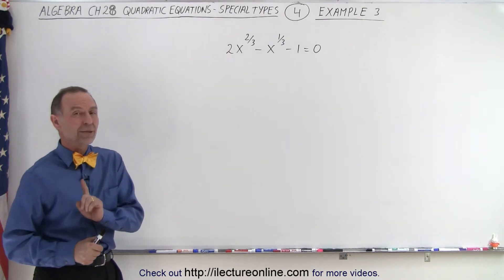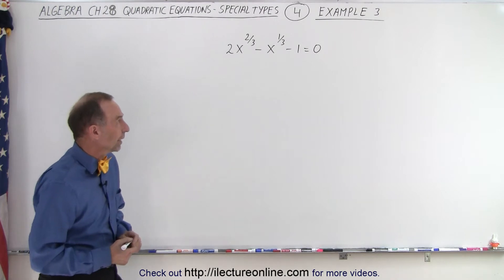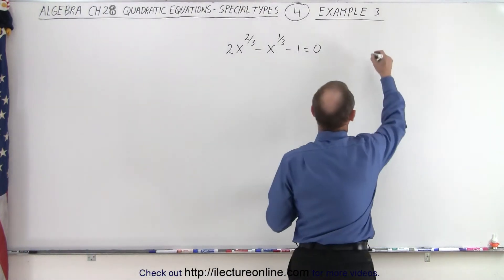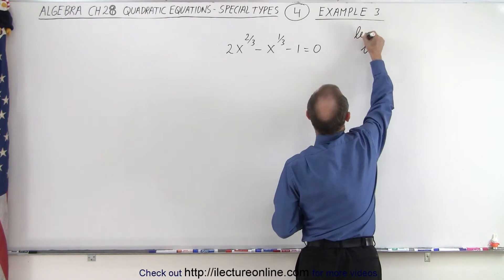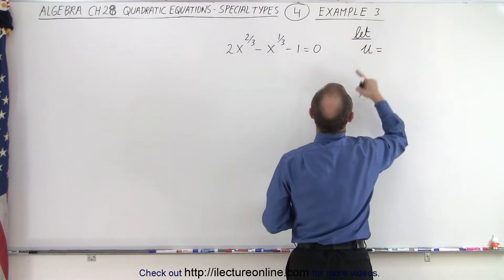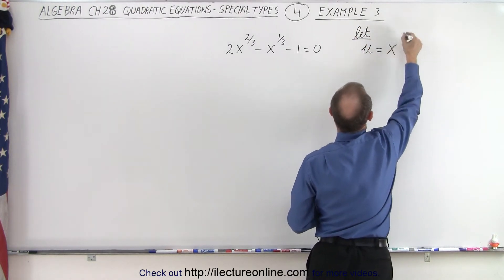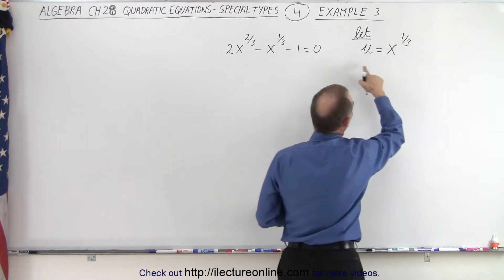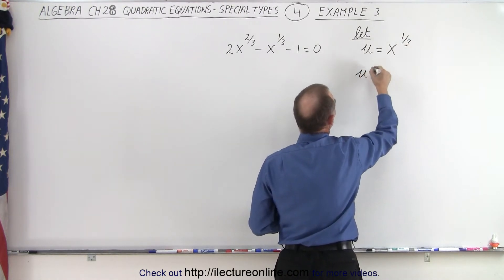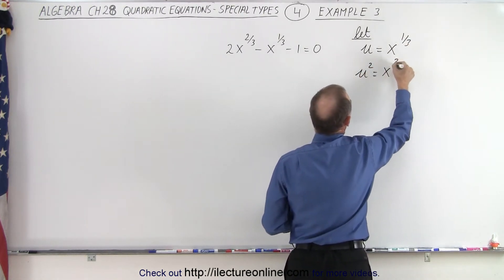But first we need to make the proper substitution. And if we make the following substitution, let u equal x to the one-third. And now when we square both sides, we can say u squared equals x to the two-thirds.